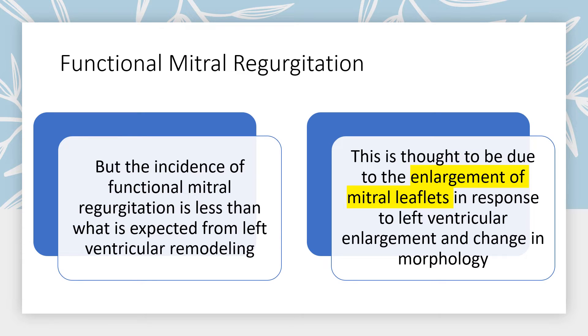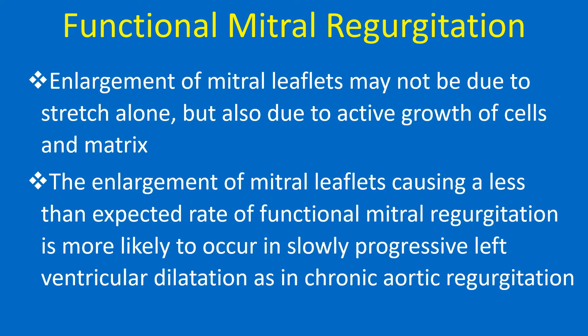The incidence of functional mitral regurgitation is less than what is expected from left ventricular remodeling. This is thought to be due to the enlargement of mitral leaflets in response to left ventricular enlargement and change in morphology. The enlargement of mitral leaflets may not be due to stretch alone, but also due to active growth of cells and matrix. This compensatory leaflet enlargement is more likely to occur in slowly progressive left ventricular dilatation, as in chronic aortic regurgitation.